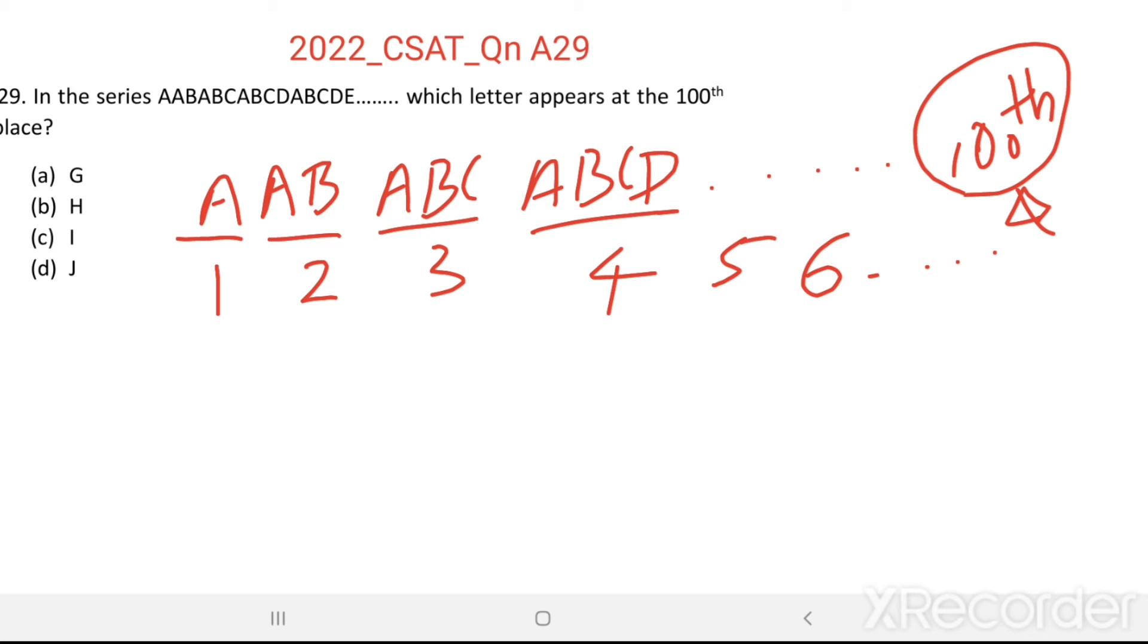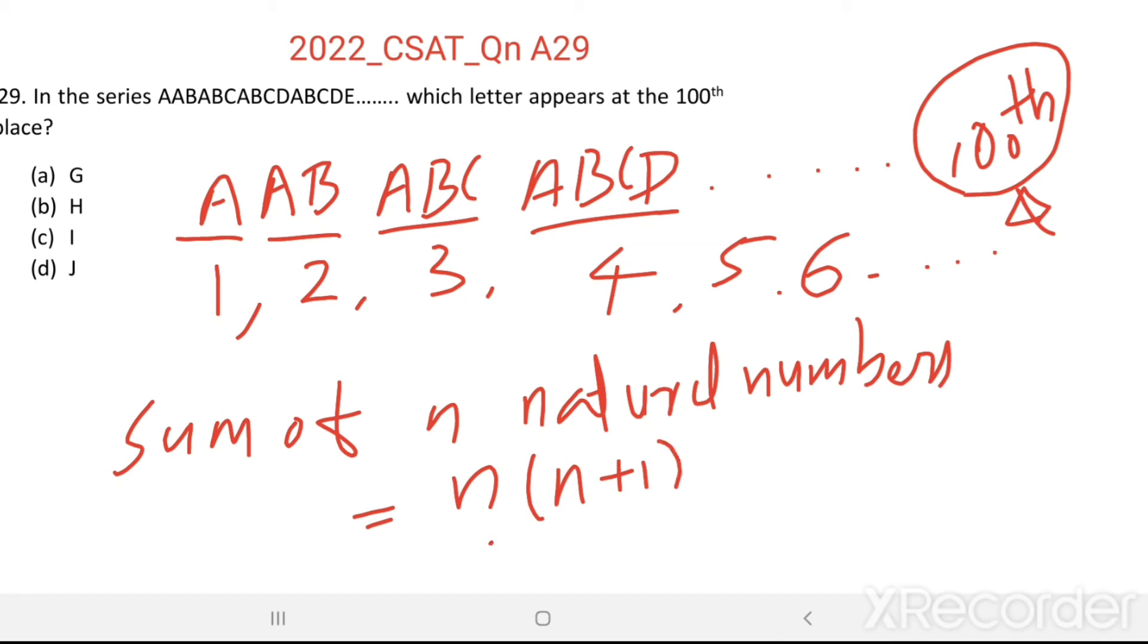So to find that, here you can see this is natural numbers. Sum of n natural numbers equal to n into n plus 1 divided by 2.